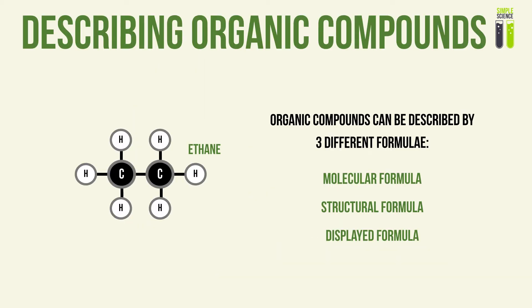Now we look at how to describe organic compounds. A first step is having a symbolic way to describe them, so we use formulae. There are three main types of formulae used to describe organic compounds: the molecular formula, the structural formula, and the displayed formula. There is actually a fourth — the general formula — which we will discuss under homologous series.